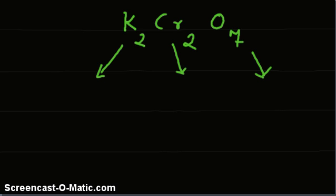So, the atomic mass of potassium is 39, that of chromium is 52 and oxygen is 16.